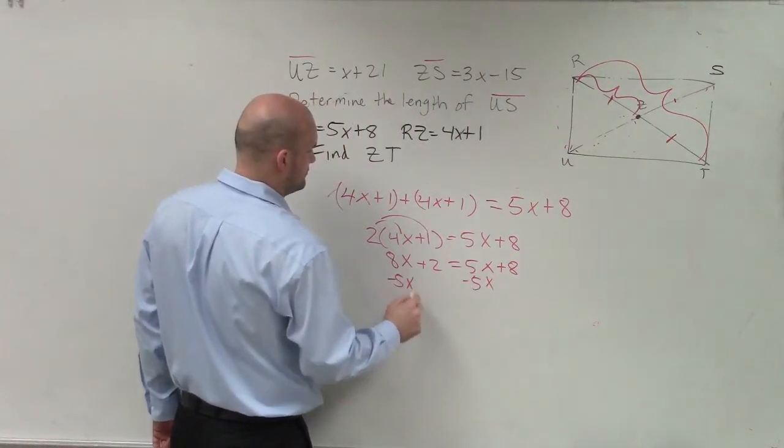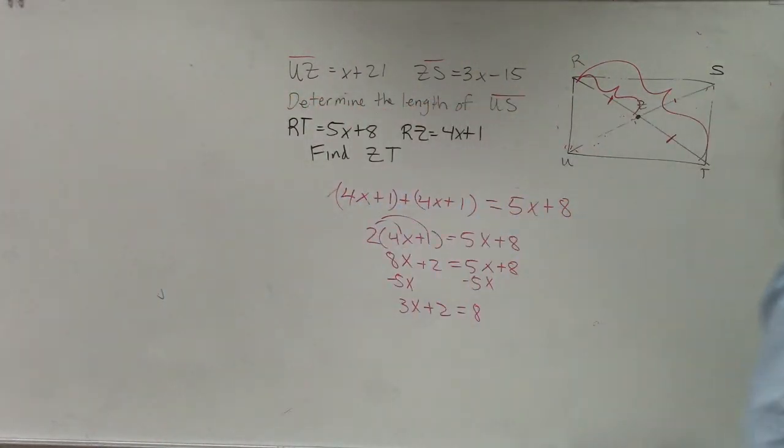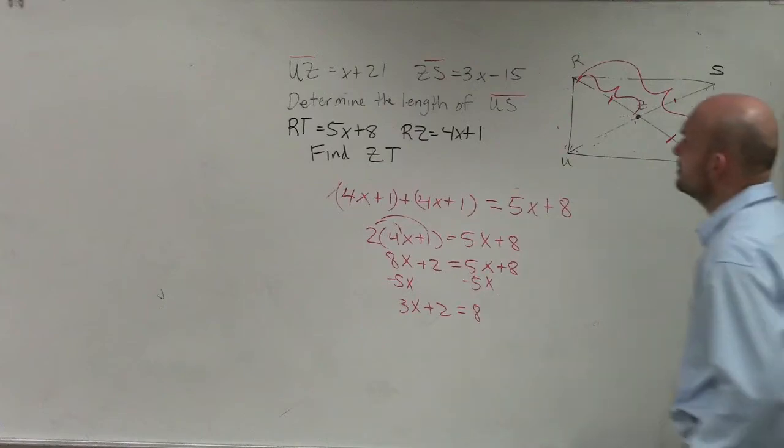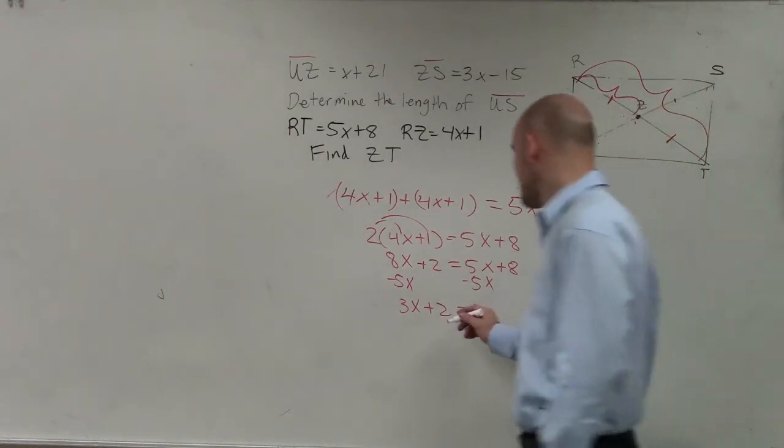Subtract 5x. 3x plus 2 equals 8. Oh, what are we trying to find? We're trying to find ZT. OK, so we need to figure out what x is. So then I subtract 2.